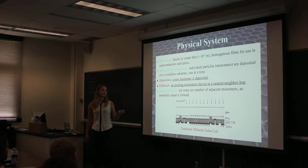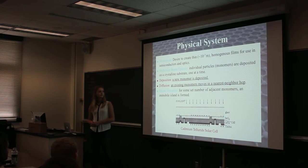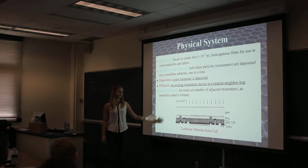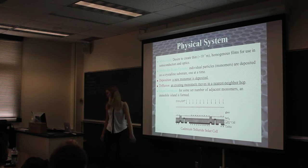And there's diffusion, where an existing particle on the substrate can make a nearest neighbor hop to a neighboring location on the substrate. Islands form when some set number of adjacent monomers form bonds amongst themselves and it becomes an immobile island that no longer diffuses. Here we have a picture of a cadmium-telluride solar cell with several different films.